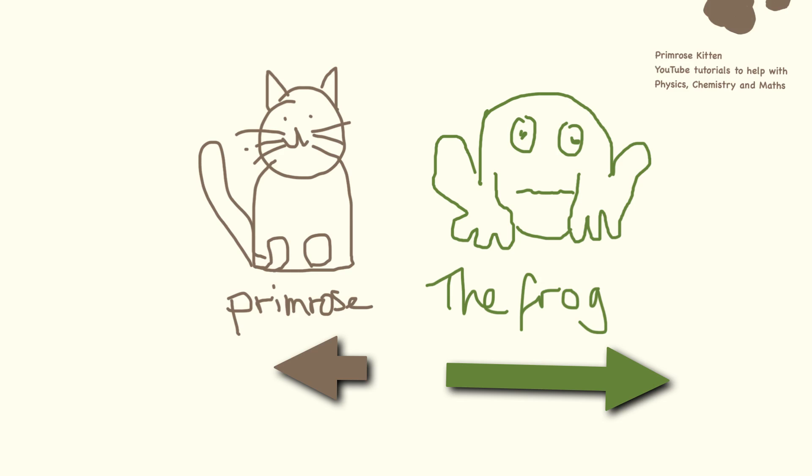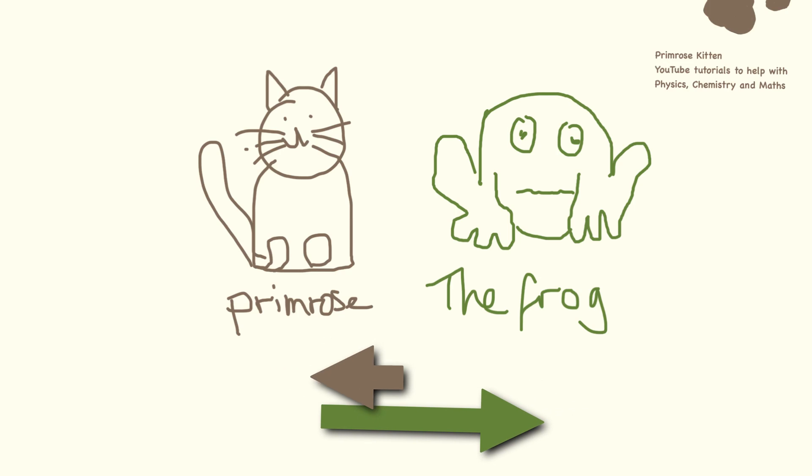Here, the frog is putting up much more of a fight. So the froggy arrow is much bigger and Primrose isn't pushing very hard. This could also be a car putting a little bit of acceleration on and there'd be a lot of friction or a lot of braking going on here. So if we just move these arrows...